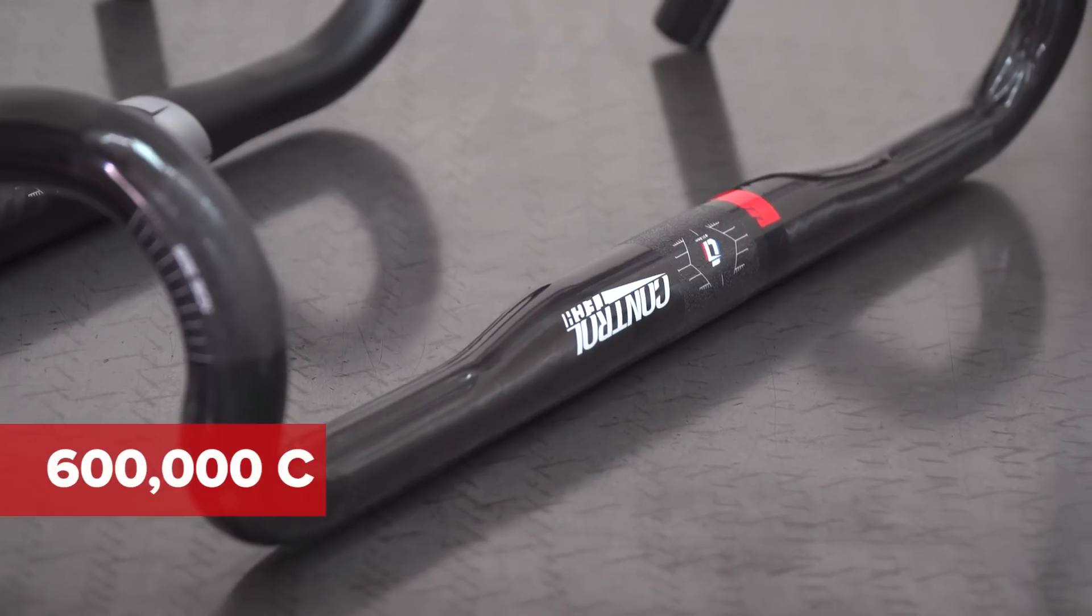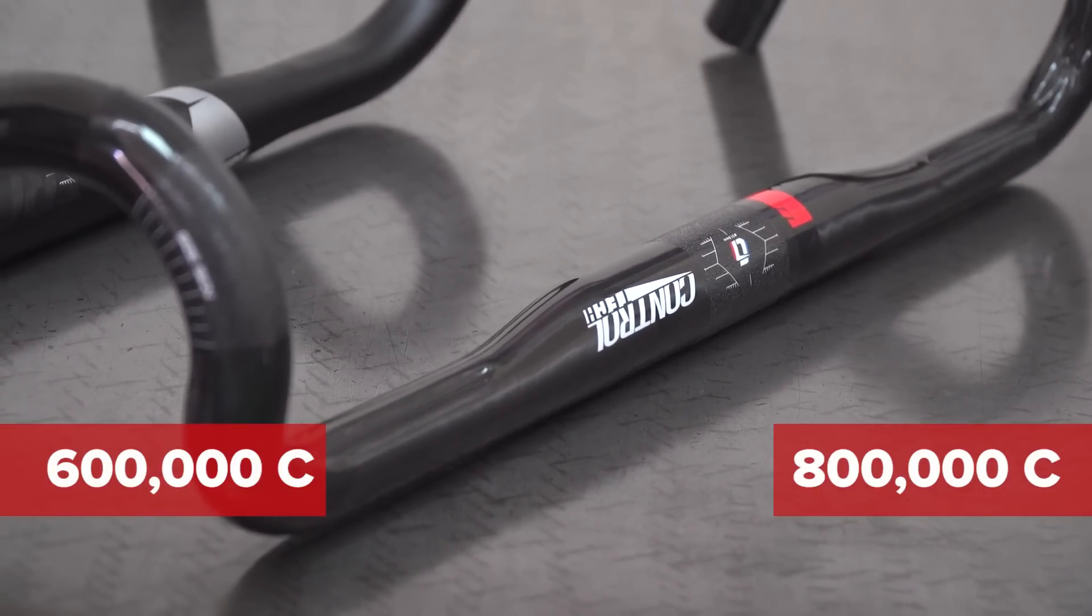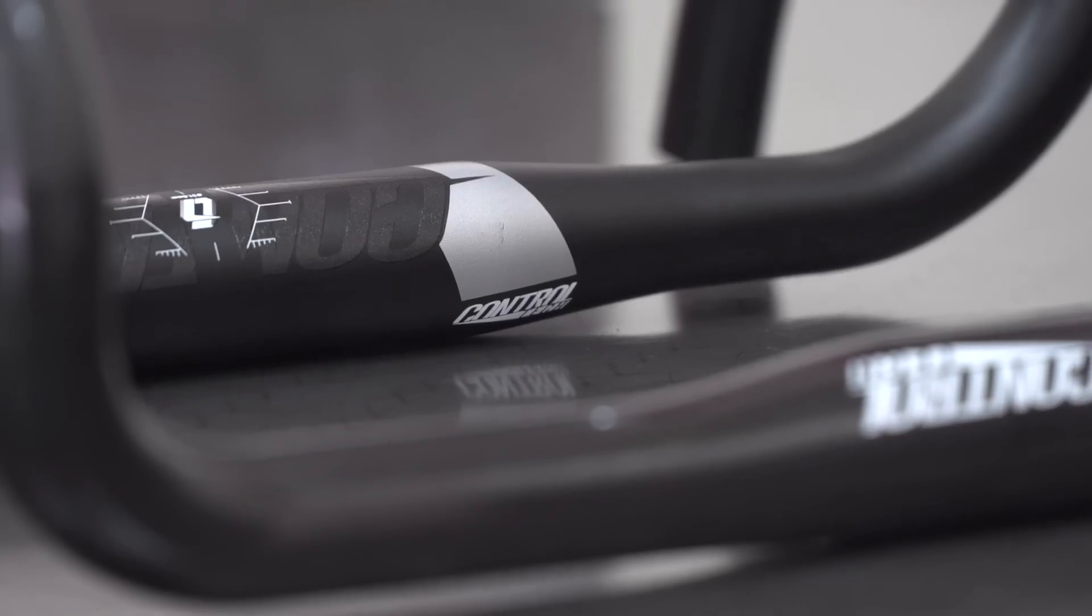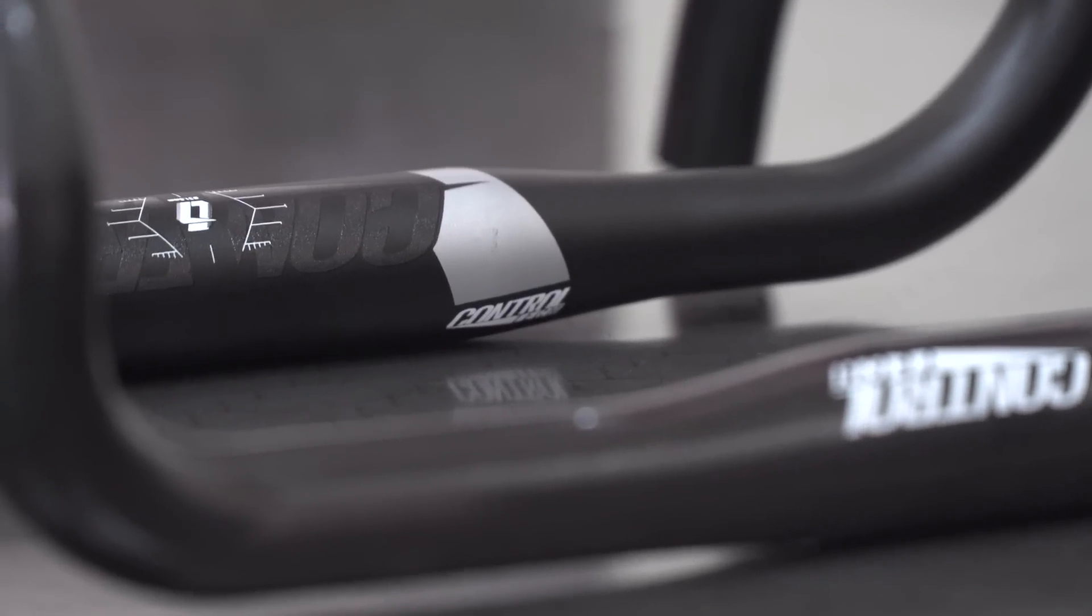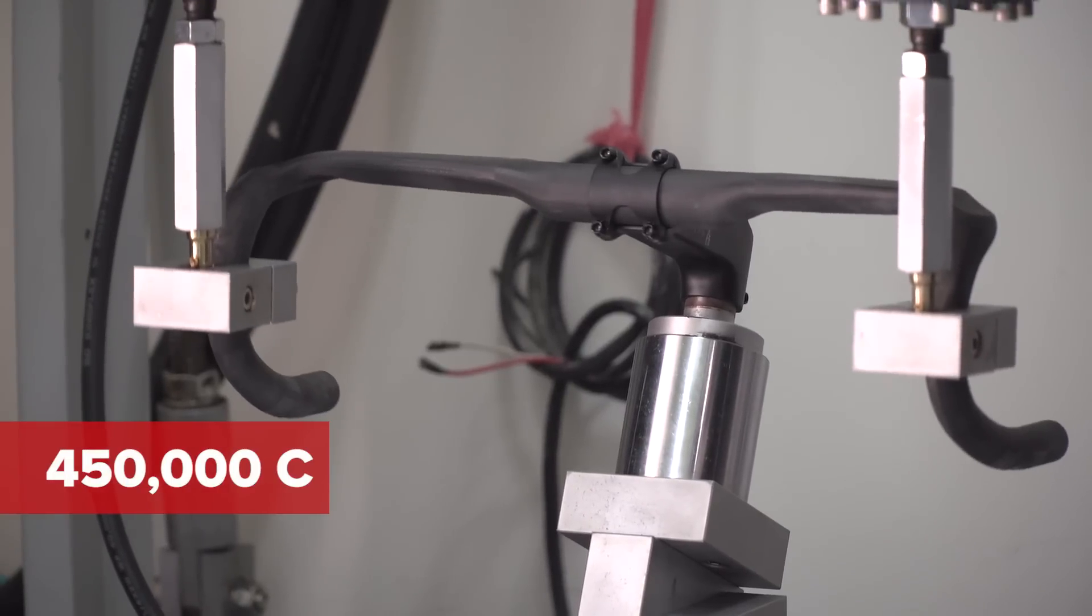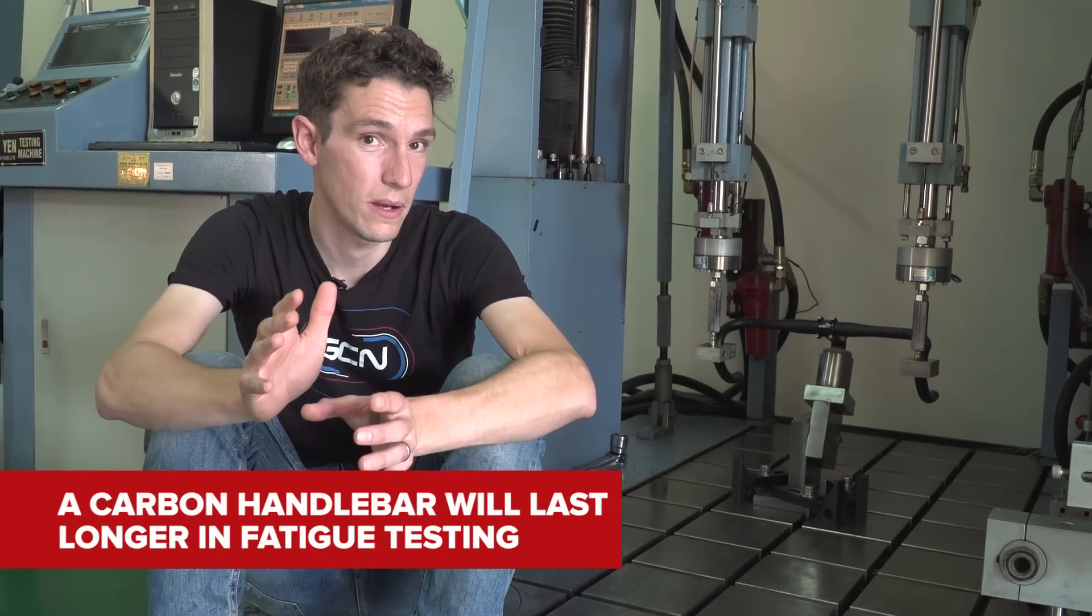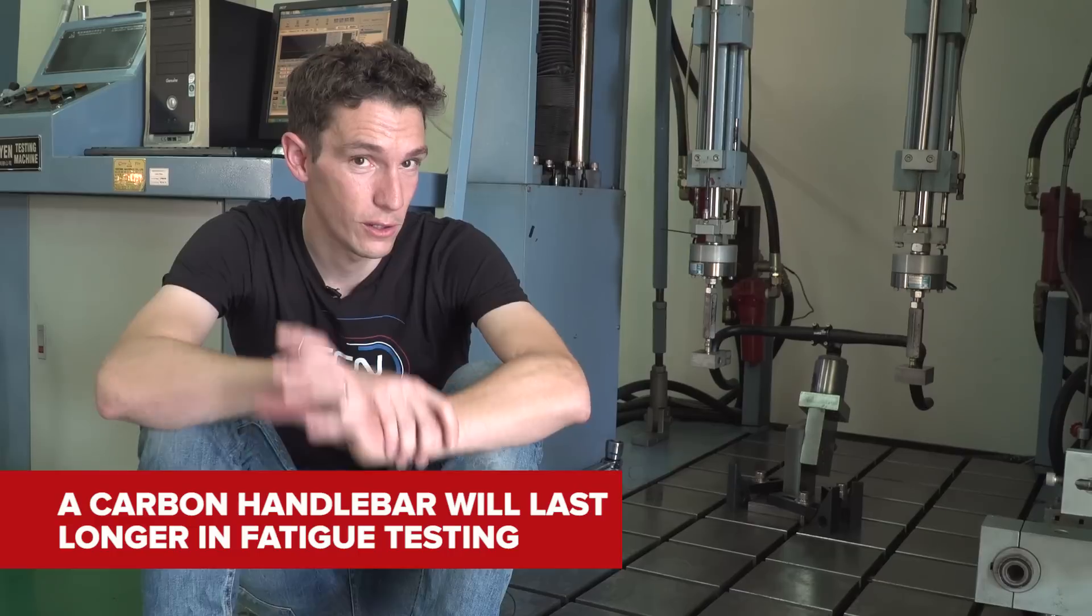We've turned the machines off. Control Tech have pointed out that as an experiment, it's not a terribly good one. Because actually from their previous research, it would take between 600,000 and 800,000 cycles for a carbon bar to break. That's three days, non-stop. With an aluminium bar, though, it's between 450,000 and 500,000 cycles. So significantly less. In fatigue testing, a carbon handlebar will last longer.